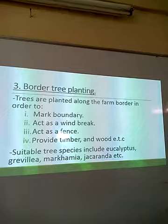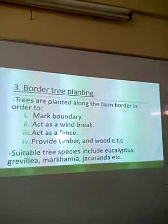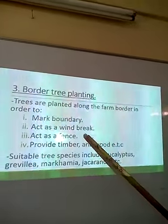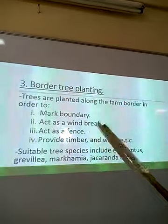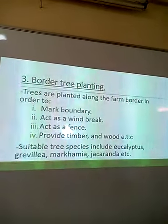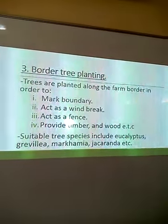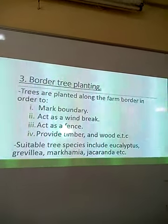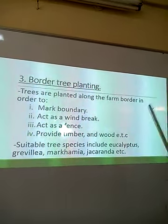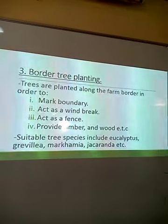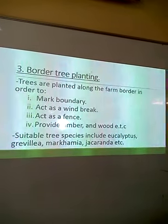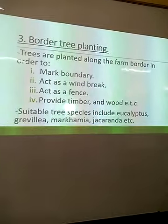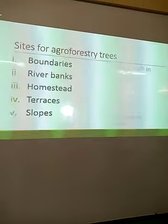They act as a windbreak because they reduce the speed of wind so that it does not become destructive on the farm. They also act as a fence — you can use cypress to fence your farm — and from the trees we can get timber, wood, and other products. Suitable species include eucalyptus, grevillea, makamia, and jacaranda among others.